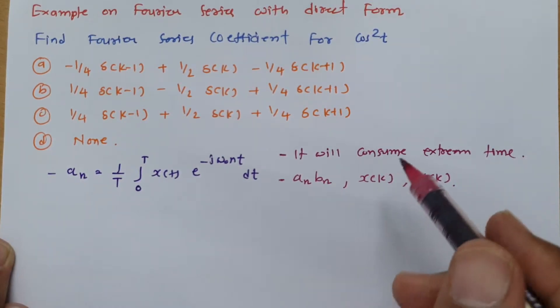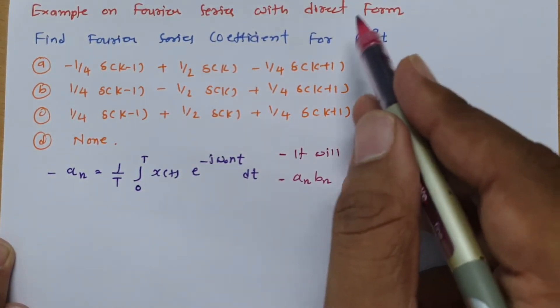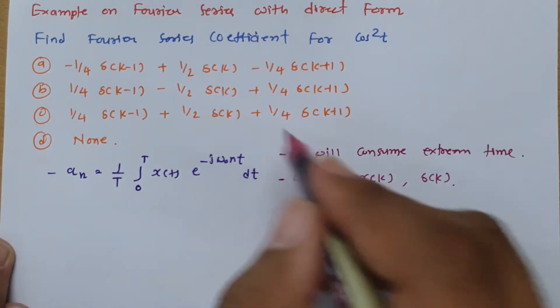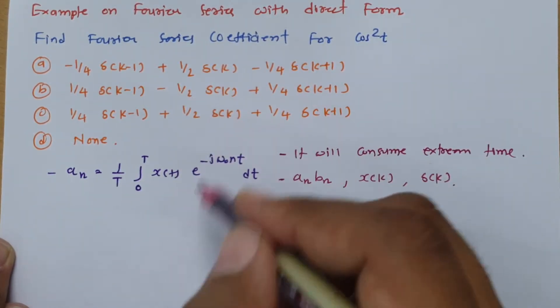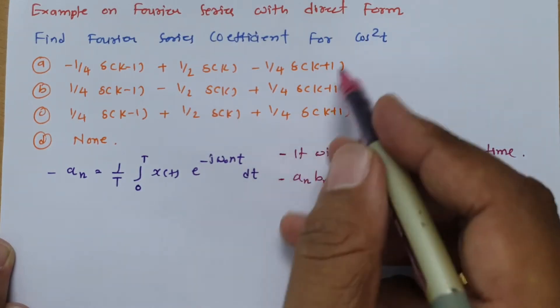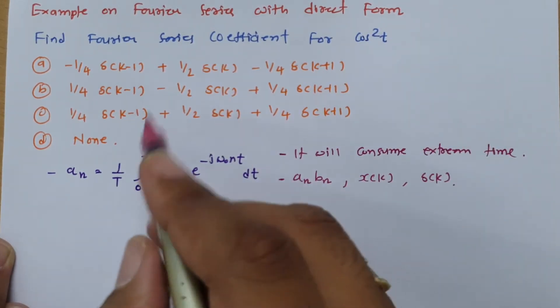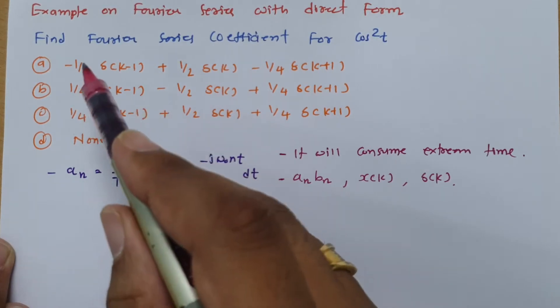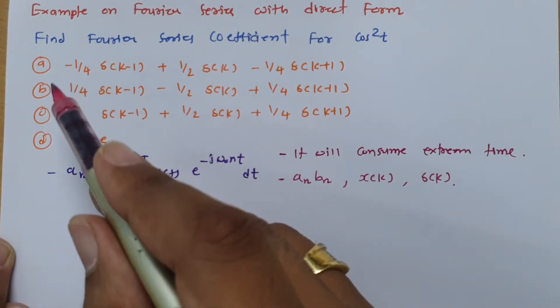So now all we need to do is we need to expand cos²t and we can compare that with basic form. So if we expand cos²t, then directly one can be able to calculate and compare coefficients and we can predict what is that answer in ABCD.